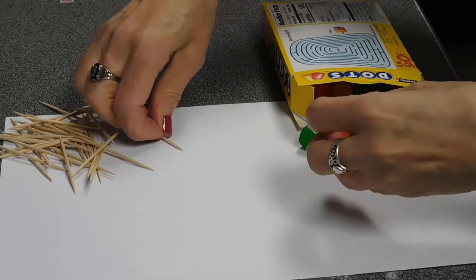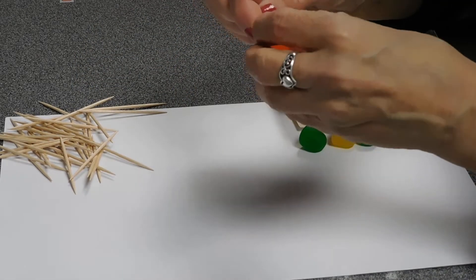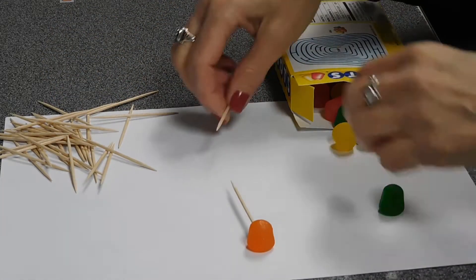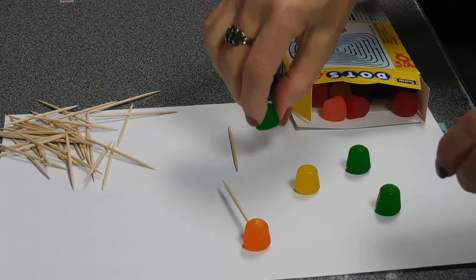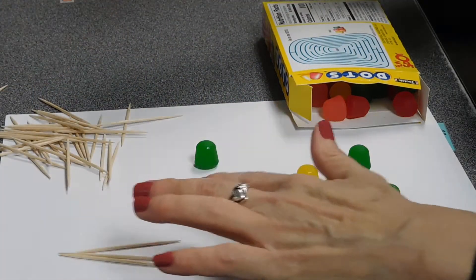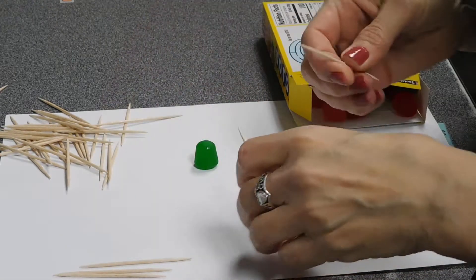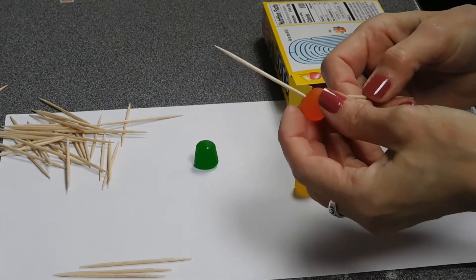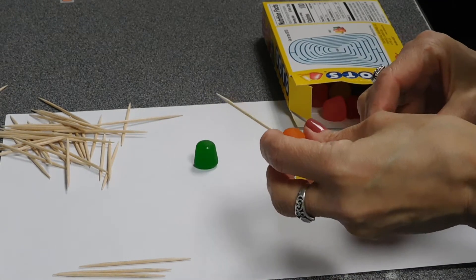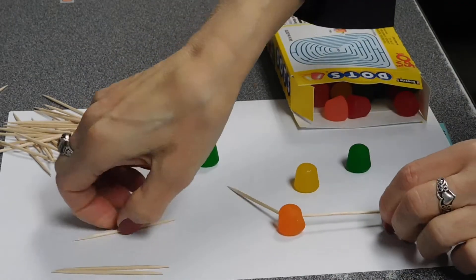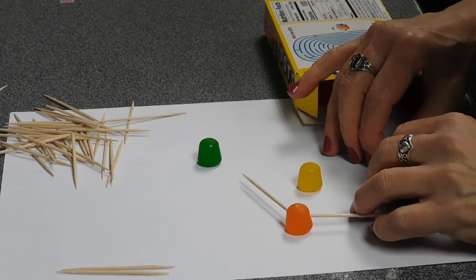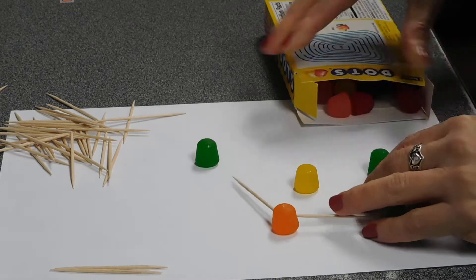So to start off, we are going to build a pentagon with five of the gumdrops and five pieces of toothpick. So we're just putting the toothpicks into the gumdrops. I'm trying not to eat the gumdrops.